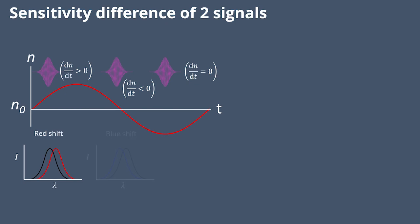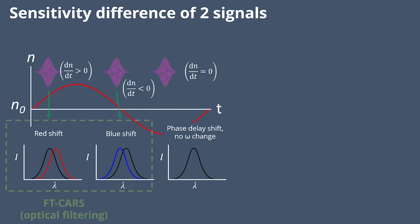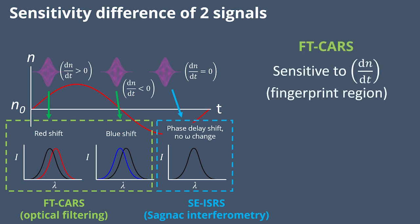We can have a red shift of the probe, a blue shift, or a phase delay shift without any color change. We detect the first two in FT-CARS via optical filtering, and the last effect with SEISRS via Sagnac interferometry. The key point is that FT-CARS provides fingerprint region sensitivity in the Raman spectrum because it's sensitive to the time derivative of the refractive index, whereas SEISRS provides low frequency region sensitivity because it's sensitive to the refractive index itself. That refractive index is synchronized with the molecular vibrations.